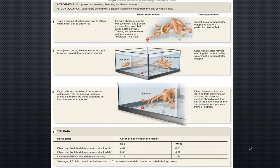One study really demonstrates how intelligent an octopus can be. They trained two groups of octopuses — one to attack a white ball and one to attack a red ball. When adjacent tanks were set up and an observer octopus was allowed to watch one of the trained octopuses, the observer learned to attack the ball placed in its tank simply because it had watched the previously trained octopus. It watches, it learns — it's very intelligent, and this is one simple experiment demonstrating just how smart octopi can be.